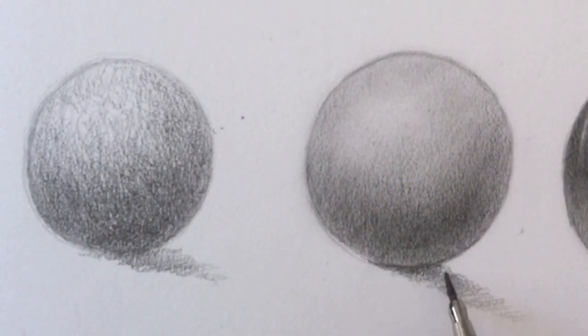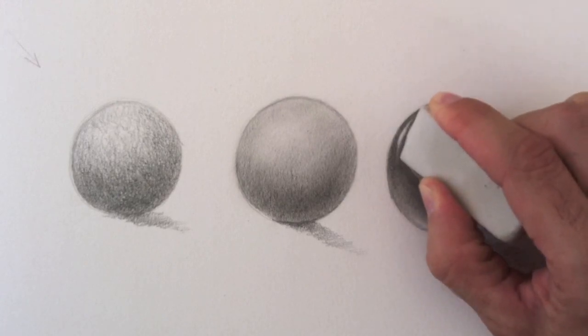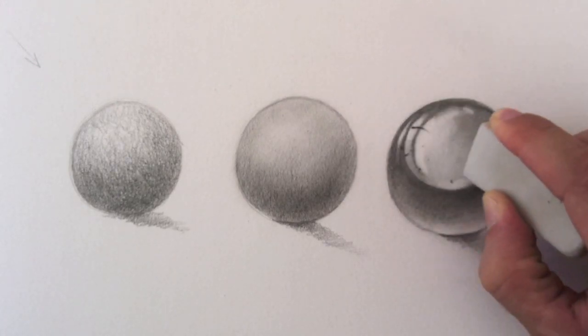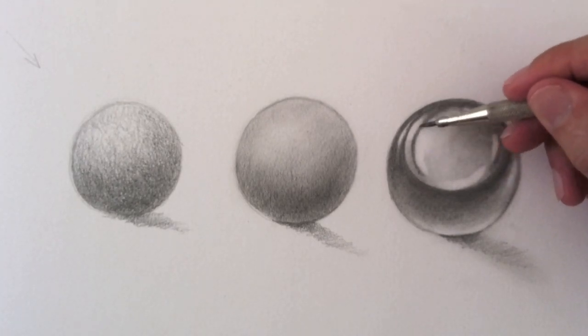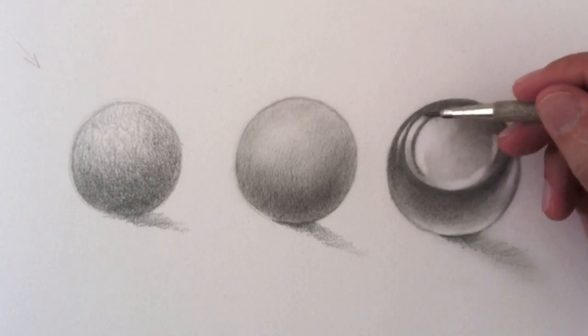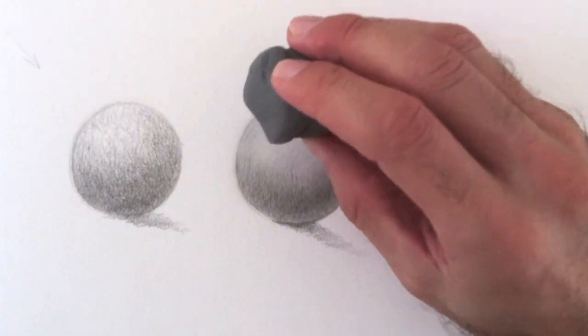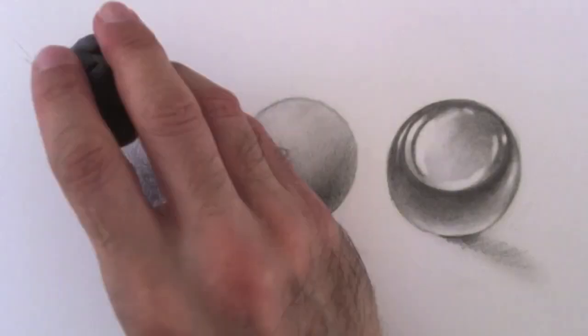Sometimes the kneaded eraser is not good enough to erase completely. Therefore, for really bright lights, sometimes I use the regular pencil eraser. While for smooth lights, the kneaded eraser is just perfect.